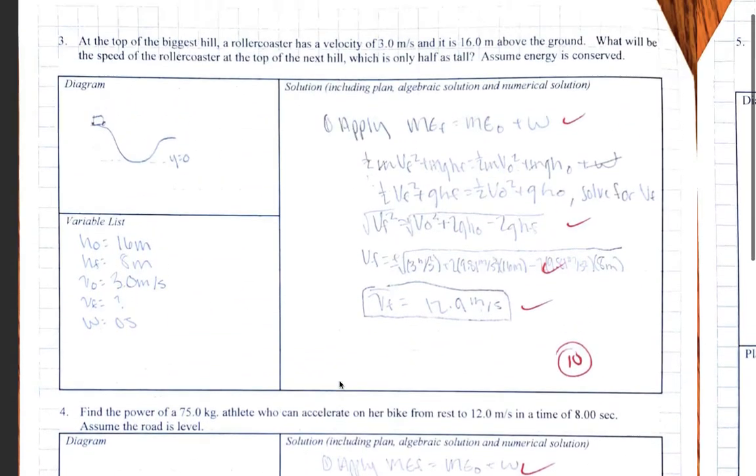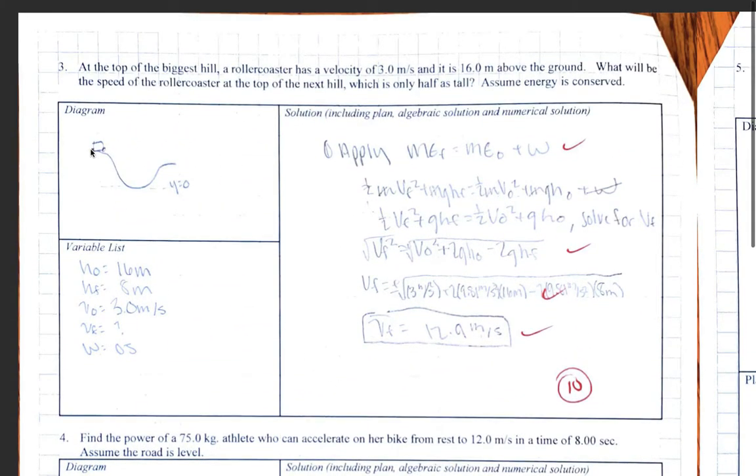On problem number three, at the top of a hill, the roller coaster is 3 meters per second, and at the next hill, which is half as high. So this person chose to make the ground Y equals zero, which means the initial height is 16 meters, and the final height is 8 meters. That's half of 16. There's other ways you can do that, but this is an example. They showed me their reference point.